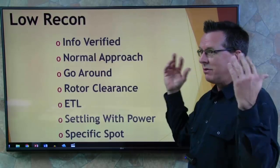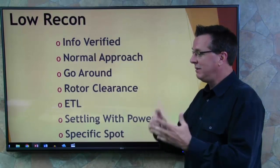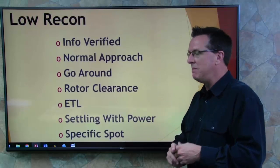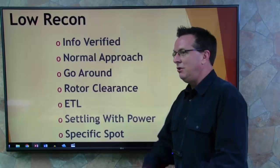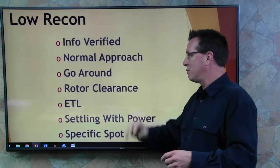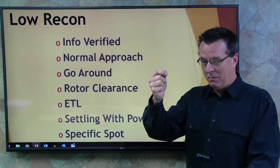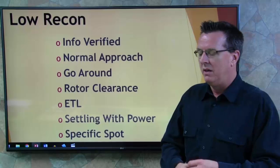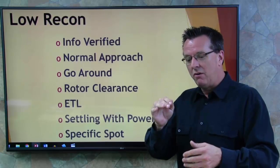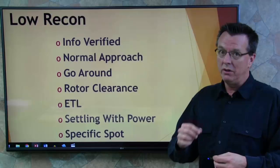Rotor clearance — of course the rotor blades keep us in the air. You hit something with your rotor blades, you're pretty much done. Look at obstacles, wires, trees. ETL — you're probably going to be below ETL on this approach, so you want to be super slow because we're worried about settling with power. These approaches in confined area landings really need to be under 300 feet per minute rate of descent. Be very slow so you can make the choice to go around, stop if you have to, and see obstacles.